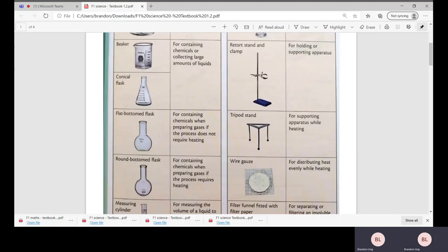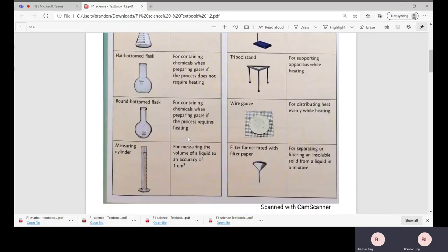Next we have the flat bottom flask and round bottom flask. The difference is the shape of the bottom part of the flask. For flat bottom flask, you are able to stand it on the table itself, whereas for round bottom flask you have to hold it while boiling.